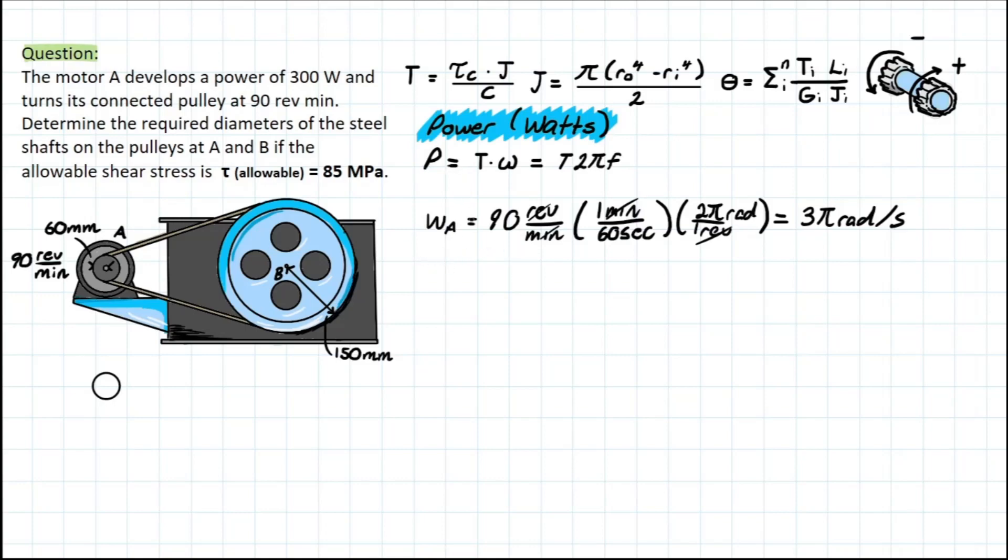Now let's solve for it. We have to re-isolate this formula such that we have torque at A being solved for. We have power over angular velocity at A. Plugging in our units, we have 300 newton meter per second. And we have the angular velocity, which we solved for previously, which is 3 pi radians per second. Remembering that radians is a unitless convention. We are going to be left with something that looks like this, 31.83 newtons per meter.